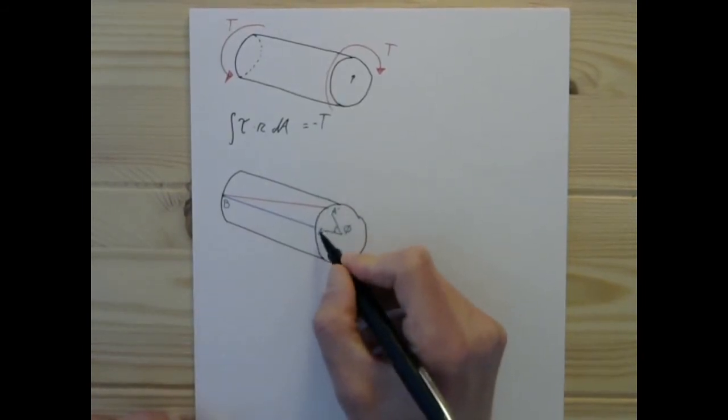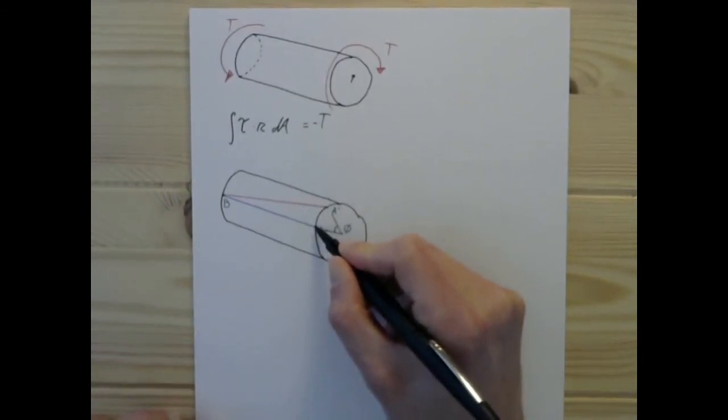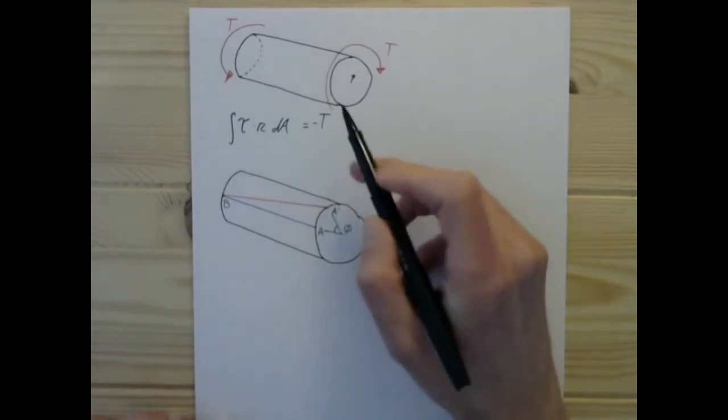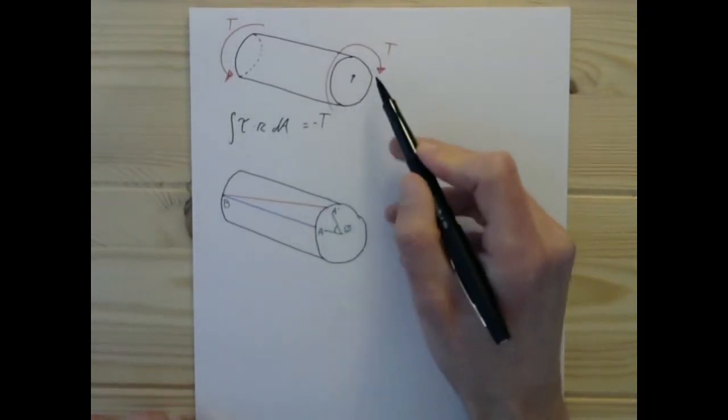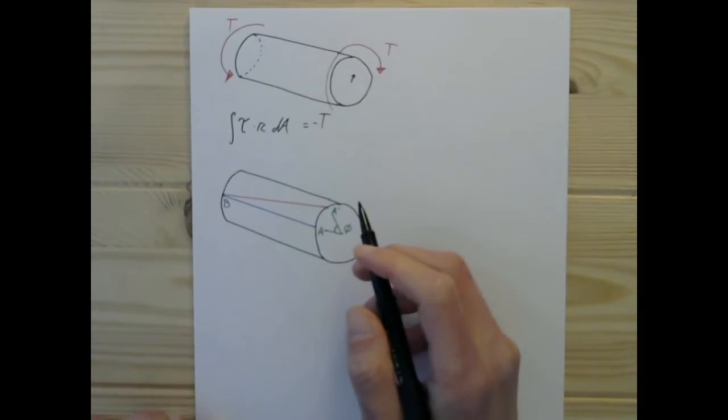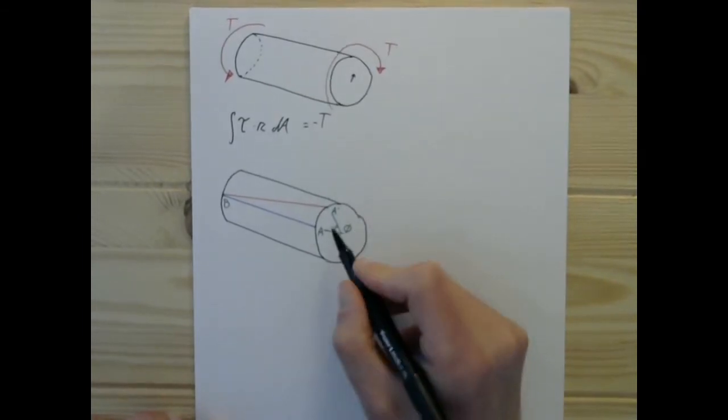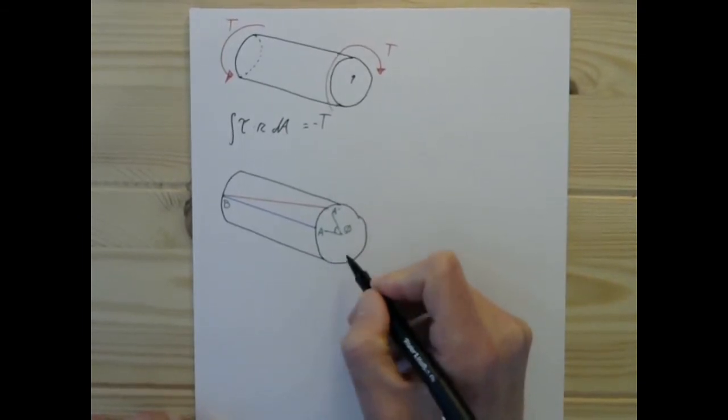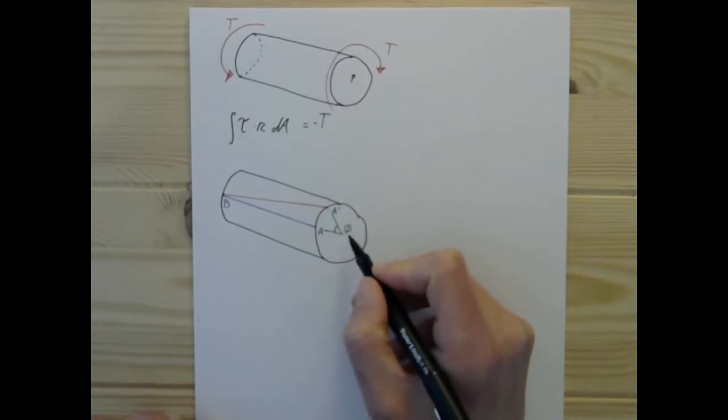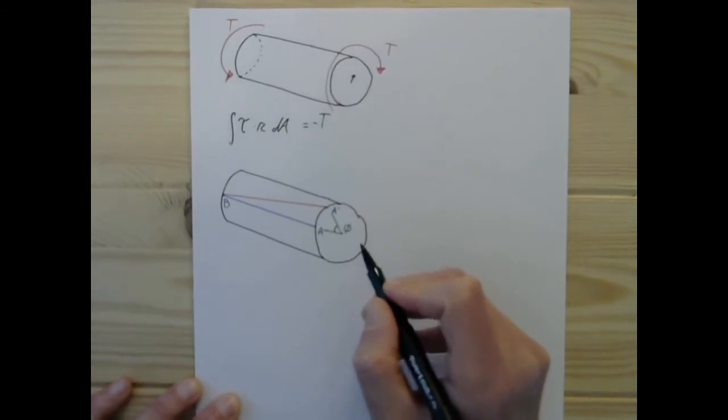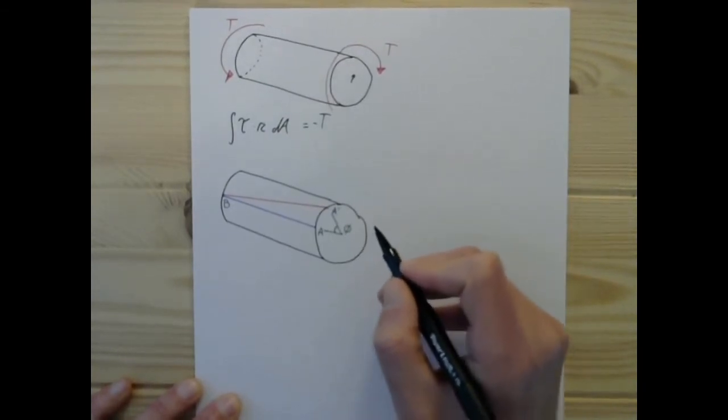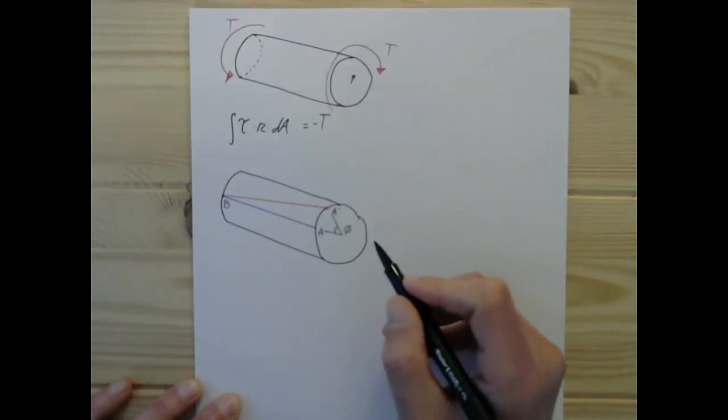...we're going to end up rotating A from this point to this point, assuming that we are in clockwise torsion as we are up here. So let's label this rotation phi, and we'll use this to determine our strain distribution.